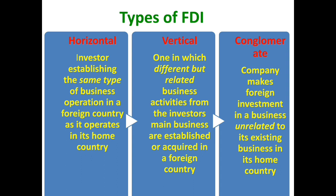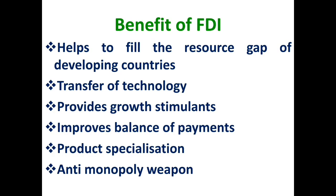In summary: if the activity is the same, it is horizontal; if activities are similar or related, it is vertical; if it is entirely different and unrelated to the business in the home country, it is conglomerate foreign direct investment. There are both benefits and demerits for FDI. The most important benefit is that it will fill the resource gap of developing countries because capital flows into the country, solving the limitation of low capital resources. It also provides transfer of technology and, by providing productive resources, acts as a growth stimulant.